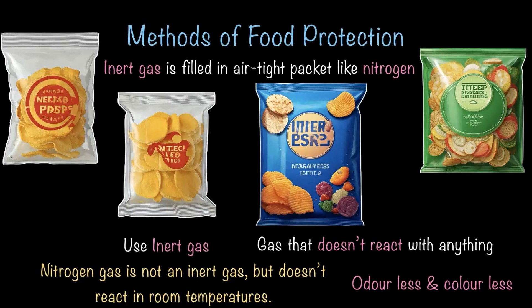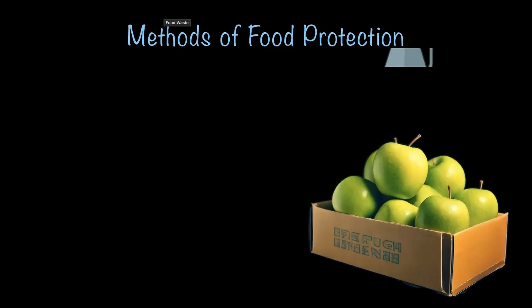So this method of food protection using inert gas is a genius way to keep food fresh for longer. Now that you know this, maybe you'll stop complaining about chip packets being mostly air. And lastly, we have the most modern, sophisticated method of food protection: radiation.